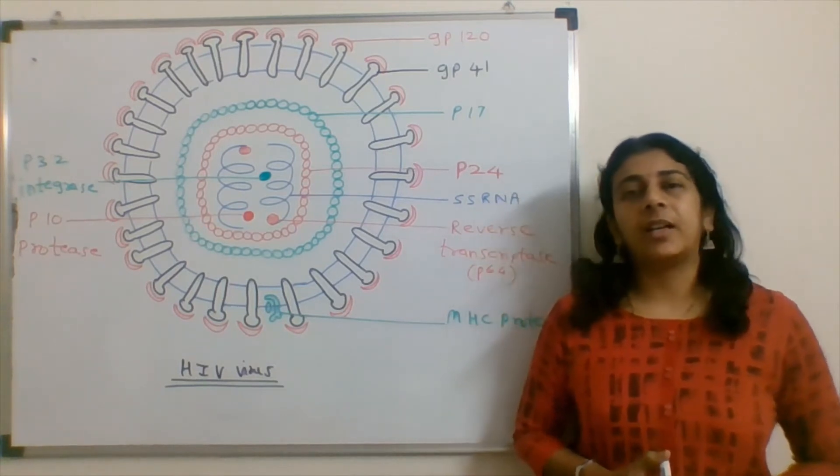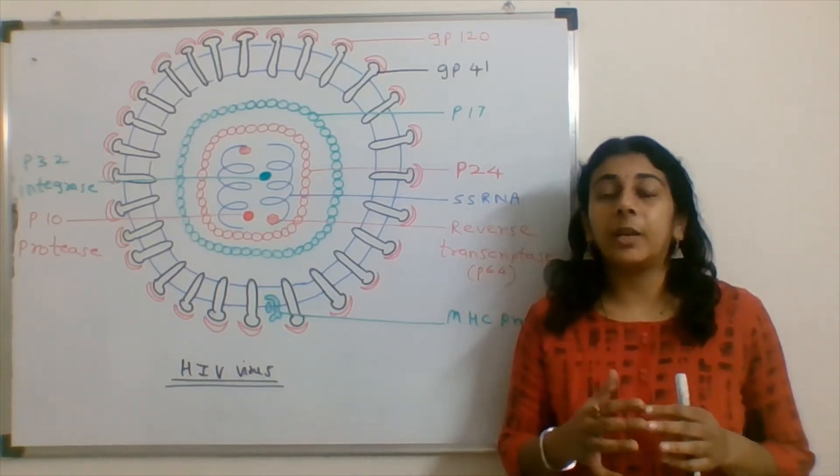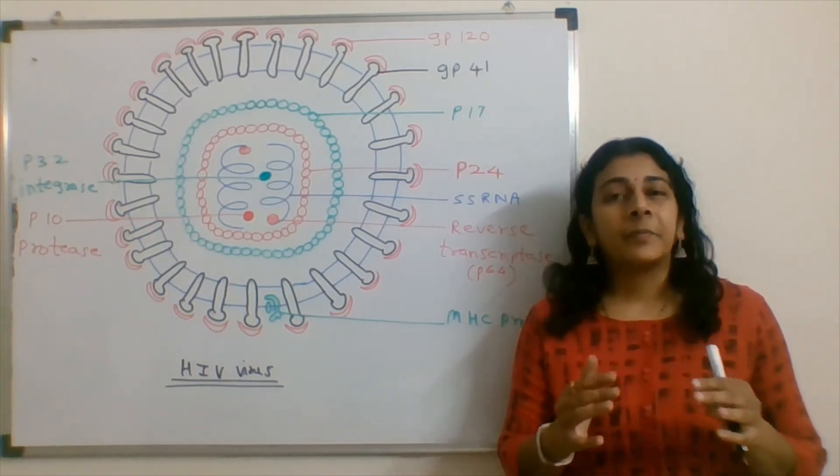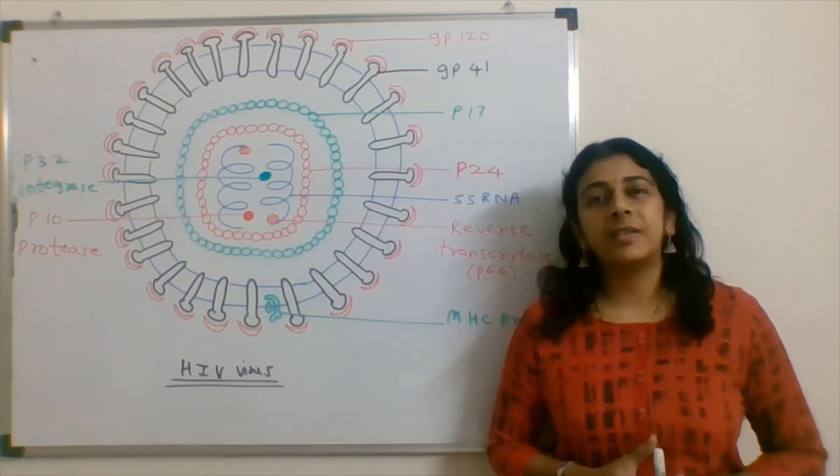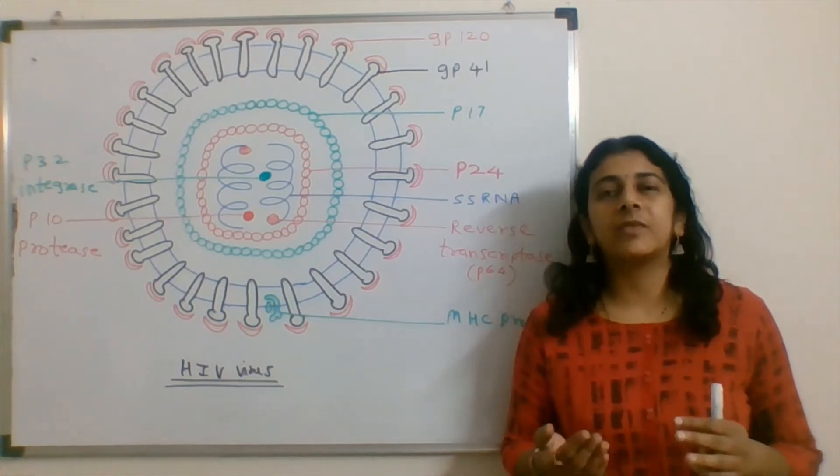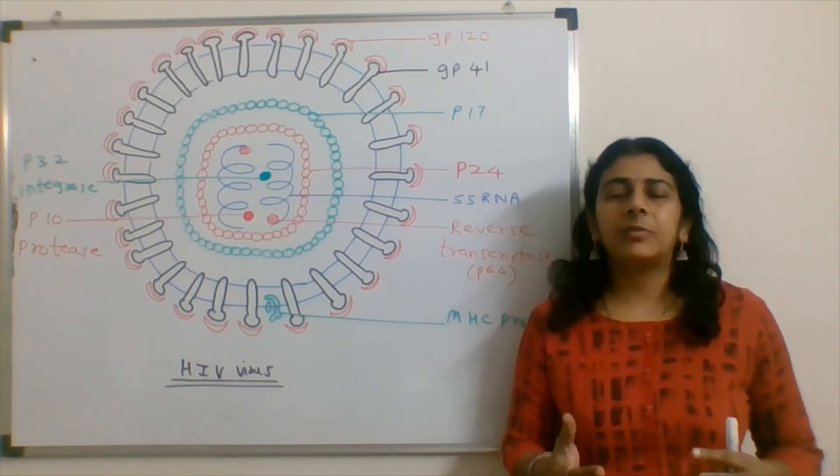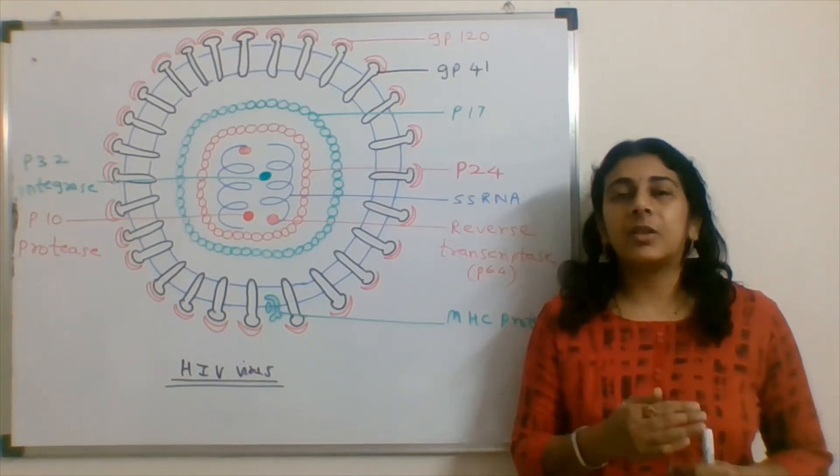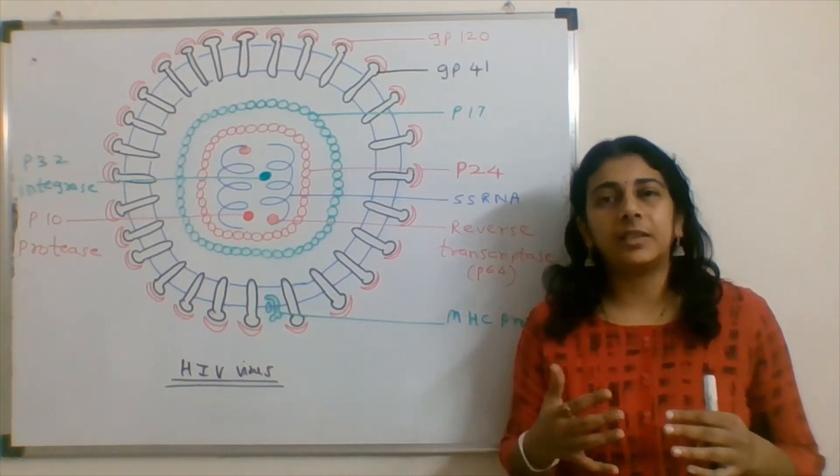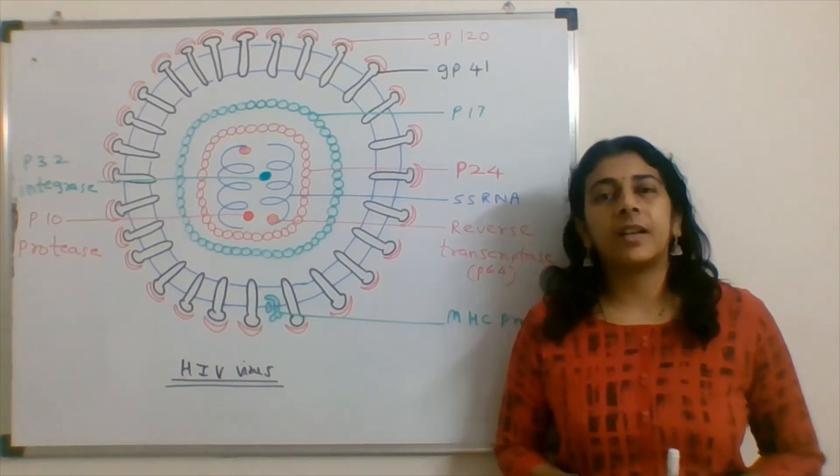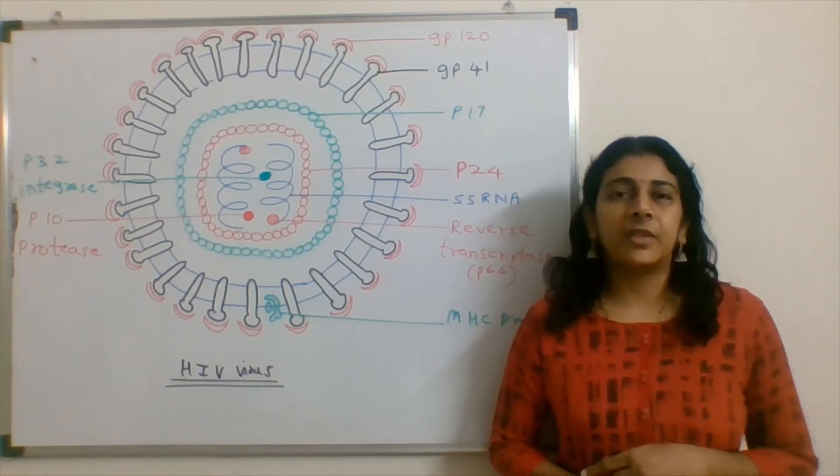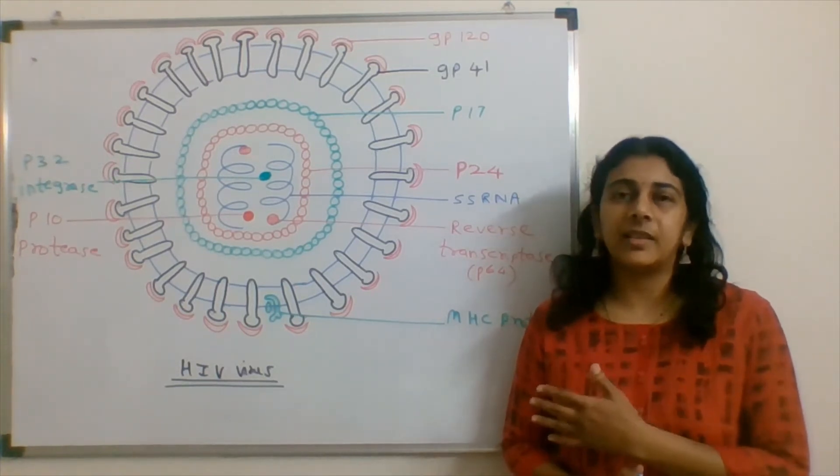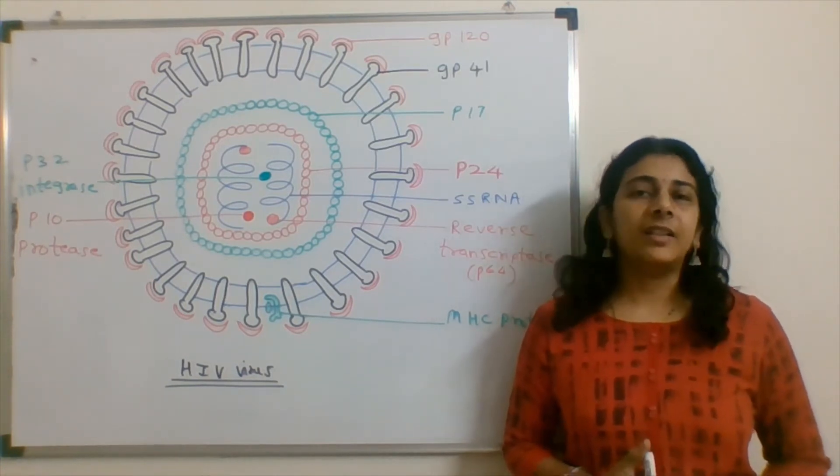This virus will attack the immune system causing it to collapse. This is why this person can get infections very quickly. If there are other small infections, they can progress very fast and because of that they can die. That's why this is called a syndrome - multiple causes, multiple diseases, infections are there and the person suffers very much. This is why it's called Acquired Immune Deficiency. This virus causes immune deficiency and it's a syndrome.